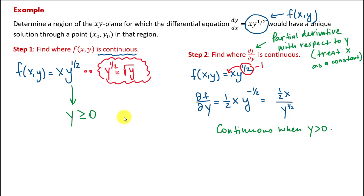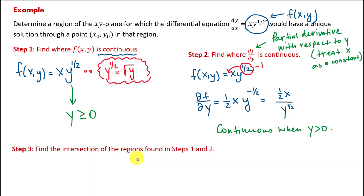After finding where f of xy and the partial derivative of f with respect to y are continuous, we need to combine these results to obtain the final answer — that is, find the intersection of the regions found in steps one and two. Both conditions must be satisfied simultaneously according to the theorem. The intersection of two regions is the part common to both — the overlap. The two regions were y ≥ 0 and y > 0. We choose the stricter one: y strictly greater than zero satisfies both conditions, so that is the intersection.